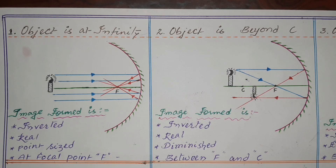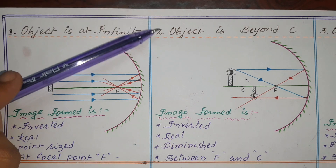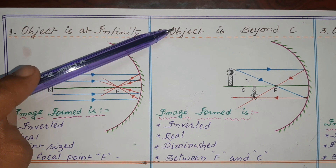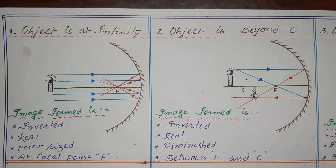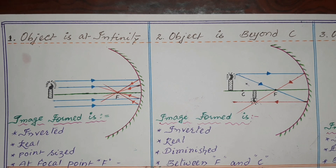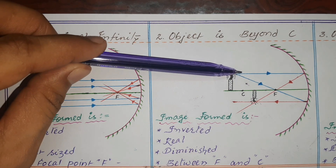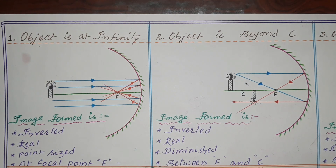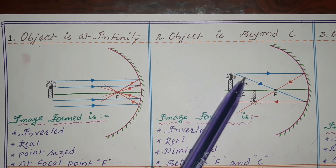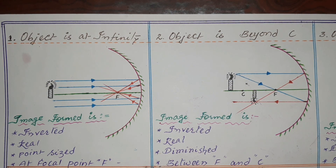The next possible position is when the object is beyond C — that is, beyond the center of curvature. In this ray diagram we consider two simple light rays: the first light ray travels parallel to the principal axis, and the next light ray travels towards the focus. We will observe their reflections.